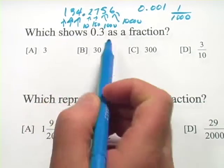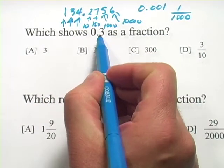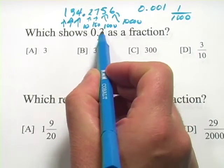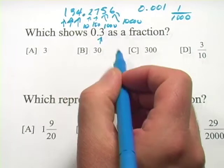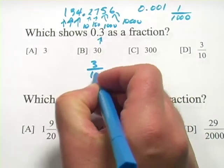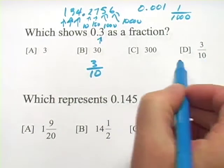Let's look at this first problem. It says, which shows 0.3 as a fraction? This first place behind the decimal point is the 10th. So that's 3 tenths, or 3 over 10, which is answer D.